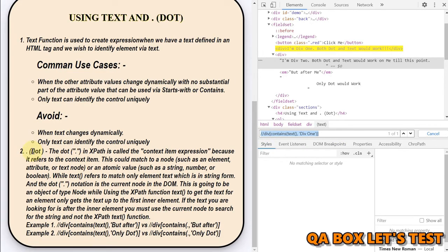Now let us talk about dot as well. So dot in X path is called the context item expression. We talked about it means this node, right? So context node, because it refers to the context item. This could match to a node, such as element node, attribute node, or text node. And it can also match to the atomic value, such as string numbers and boolean. Now we are going to understand this with the help of example.